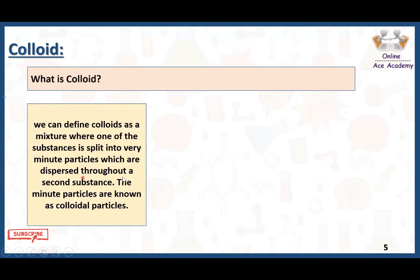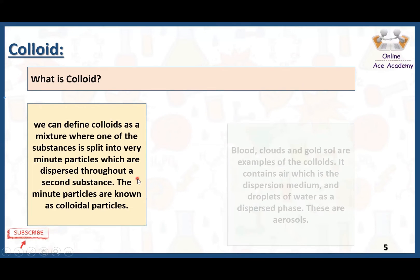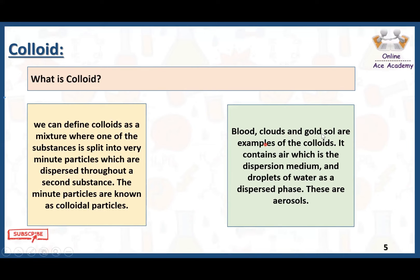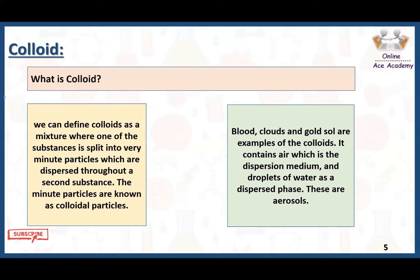The minute particles are known as colloidal particles, and the particles of a substance dispersed uniformly throughout the whole mixture form the dispersed phase. Some examples of colloids are blood, clouds, gold sol, and milk. Clouds contain air as the dispersion medium and droplets of water as the dispersed phase. The air is the dispersion medium and the water droplets dispersed within it are the dispersed phase — this is why clouds act as a colloid.